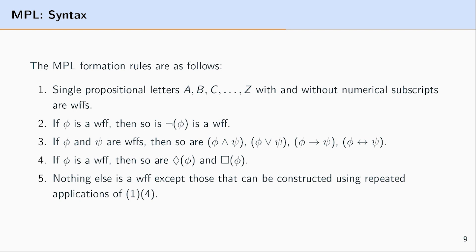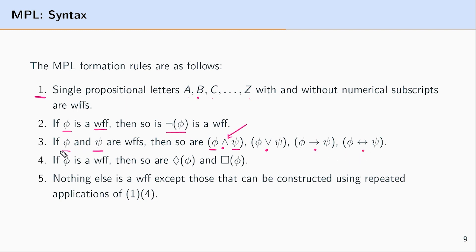Here are the modal propositional logic formation rules. Rule one: if you have a propositional letter — A, B, C through Z, with or without subscripts — then that is a well-formed formula. Rule two: if phi is a WFF, then placing negation to the left of it is also a WFF. Rule three: if phi and psi are WFFs, then you can place any of the binary connectives — conjunction, disjunction, conditionality, or biconditionality — between them, and the result is also a WFF.